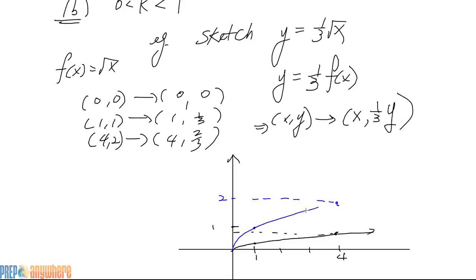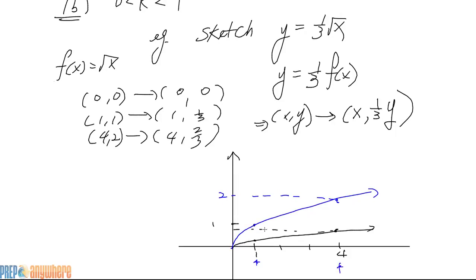Look how much flatter it is. The blue is original. The black is the new one. And what happened was this: x stayed the same, but the y got shrunken in size. It got vertically... We wouldn't call this vertically stretched. What would you call it?